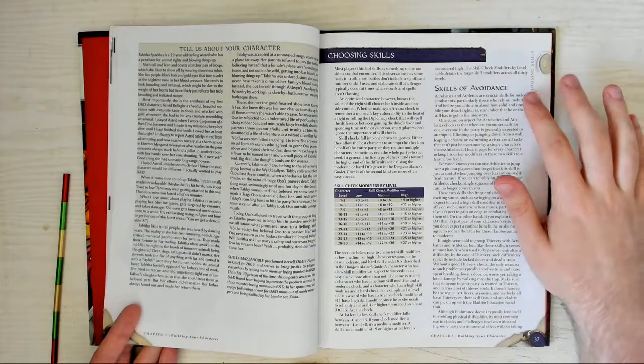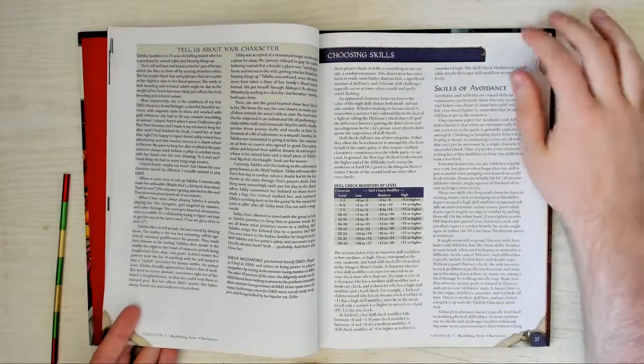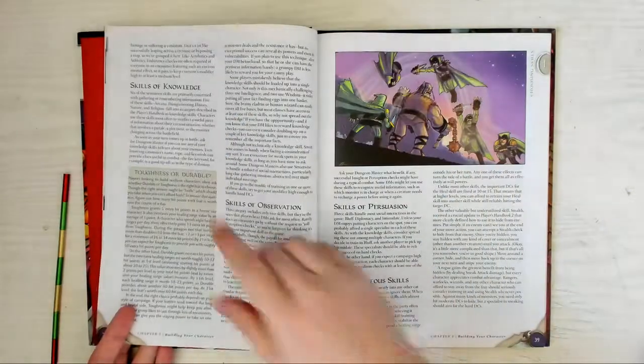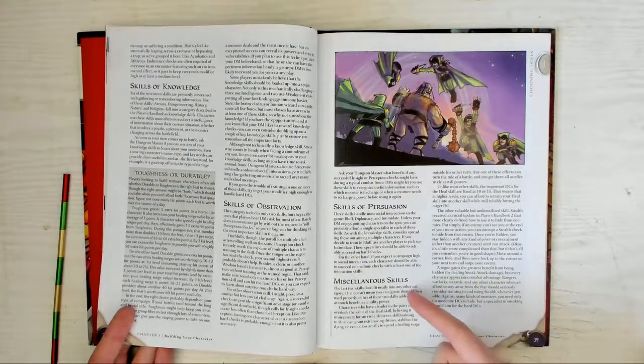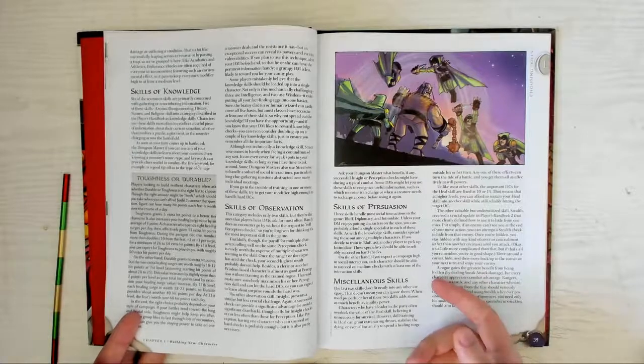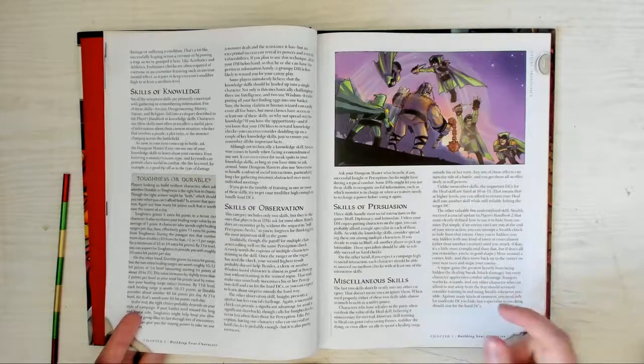The skills are not grouped by ability, which is unusual, but by avoidance or staying out of danger, knowledge, observation, persuasion, and... Oh. Heal and stealth get dumped into Misc. Why is stealth not avoidance, and heal not knowledge?